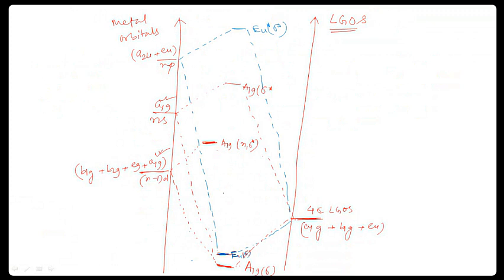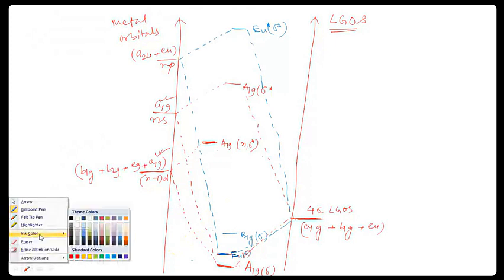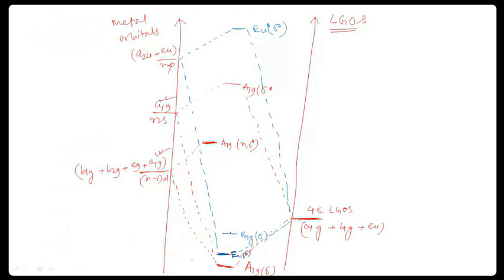So EU and EU star. Next is B1G — in both cases B1G is present. Now B1G gives B1G sigma. This is B1G. So here also B1G — B1G sigma and B1G sigma star. This B1G sigma star is far apart from here. So this is B1G — that is sigma star.